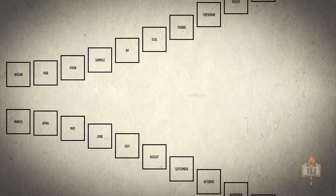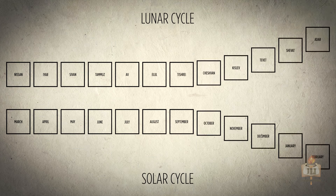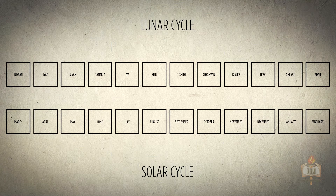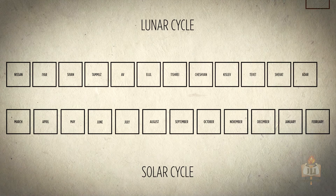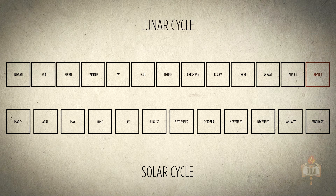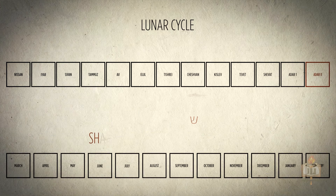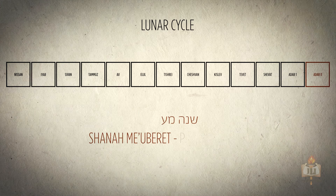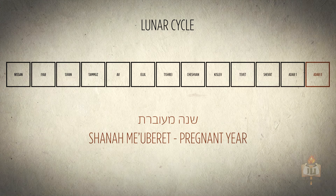In order to balance the solar and lunar cycles, the Sanhedrin periodically inserted an extra month into a year, creating a Shana Mu'uberet, or pregnant year — more commonly known as a leap year.